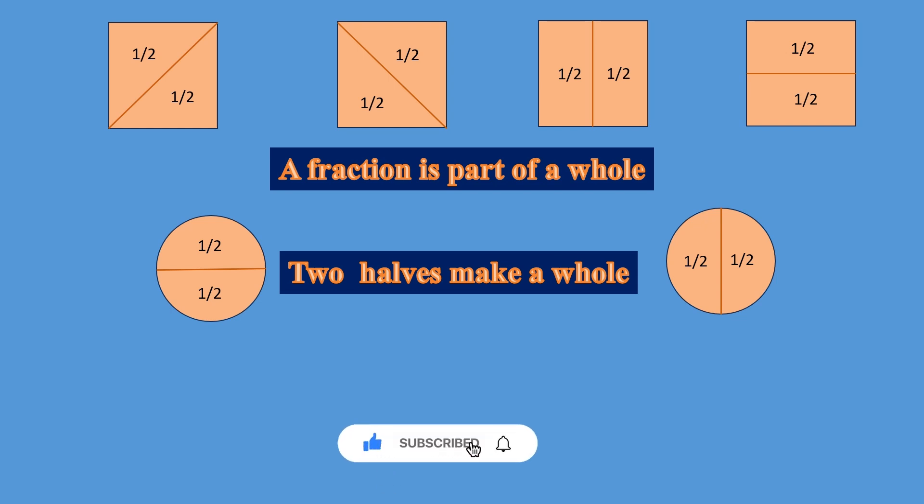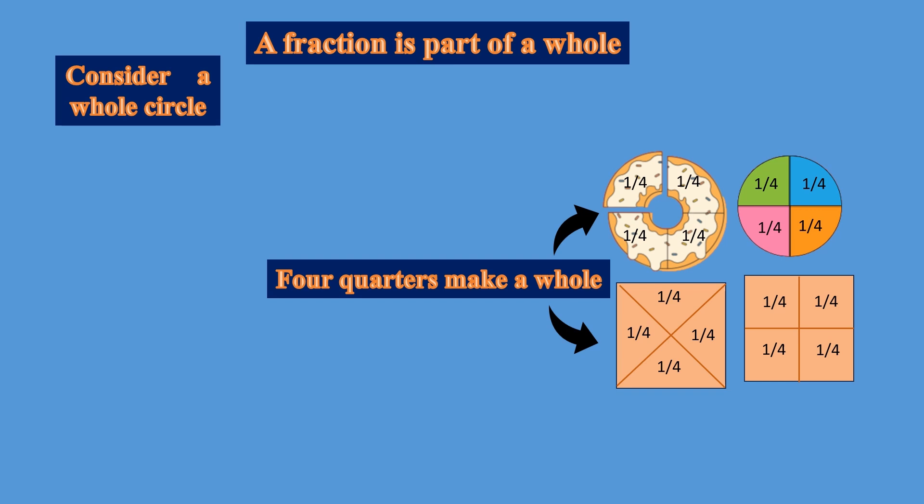Now let's see how we can divide a square into two equal parts. A square can be divided equally by cutting it along the diagonal this way, or you can cut it along vertically or horizontally. In the same way, a circle can be divided into two parts by cutting it along horizontally, and also here you can cut it along vertically. So two halves make a whole.